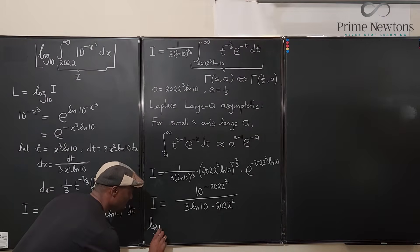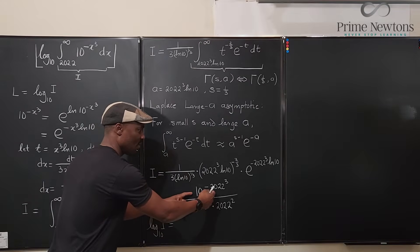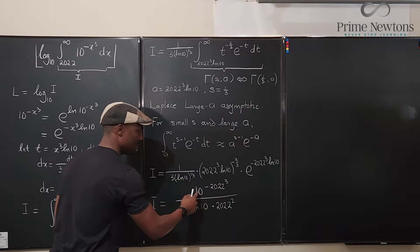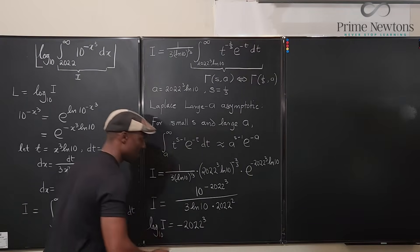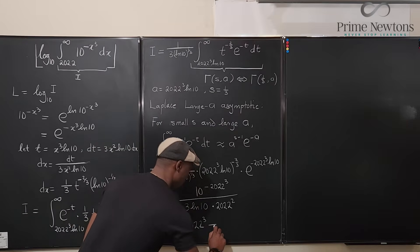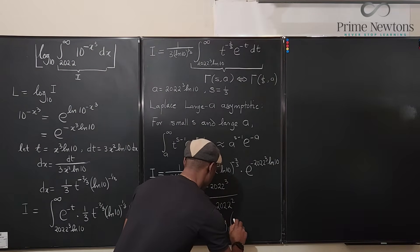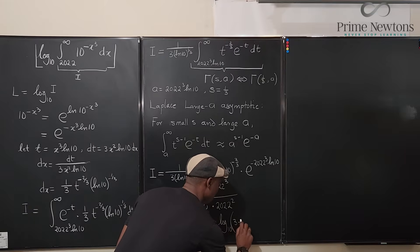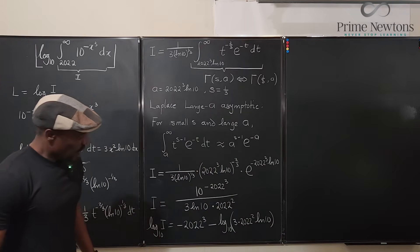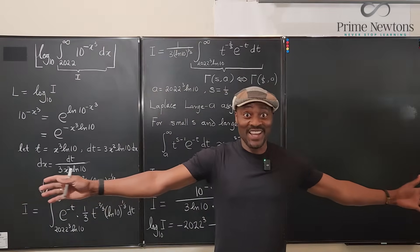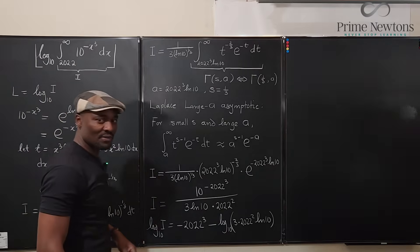Taking log base 10 of I using the laws of logarithms: log base 10 of the numerator gives negative 2022 cubed (since log base 10 of 10 to the negative 2022 cubed is just negative 2022 cubed), minus log base 10 of 3 times 2022 squared times ln of 10.